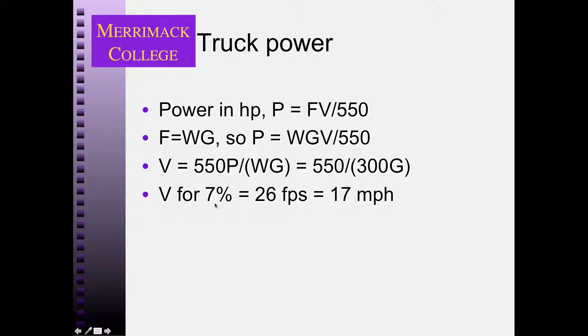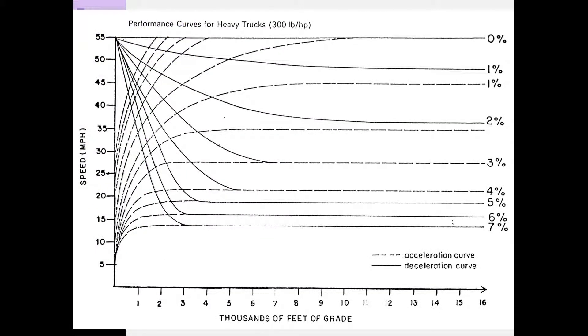So for the 7% grade, I would calculate, using this equation, 17 miles per hour. But that's slightly more than the graph value. If you look at the graph, for a 7% grade, I only get about 13 or 14%. So what's going on?